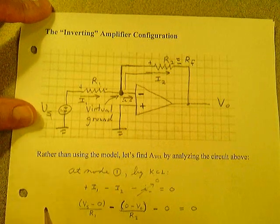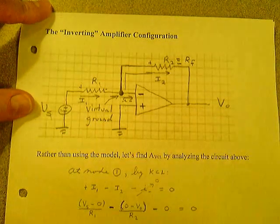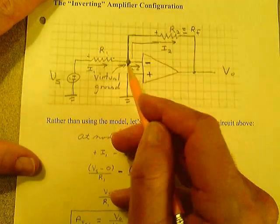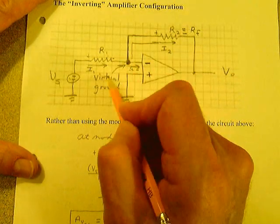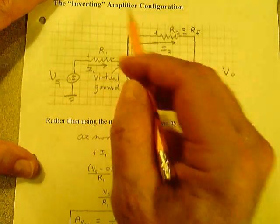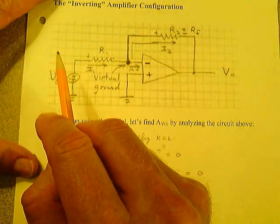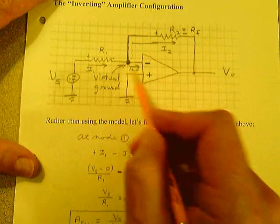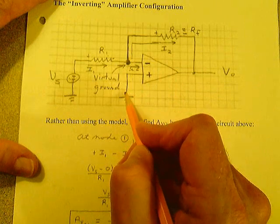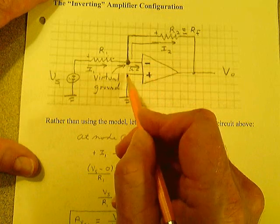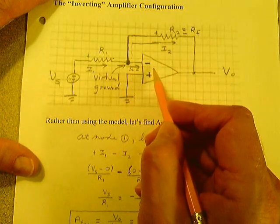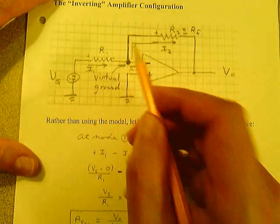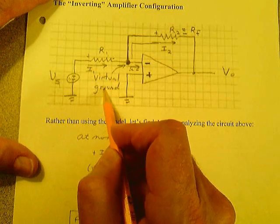Rather than using the model like we did for the unity gain amplifier, let's find the closed-loop voltage gain by analyzing this circuit. We're going to put a point here, make that a node, and call it virtual ground. Virtual grounds only exist in inverting amplifier configurations — you're not going to have a virtual ground in a non-inverting amplifier. When the non-inverting input goes to ground, that ground gets projected to this point because the op amp tries to maintain these voltages at the same level. So we call that virtual ground.